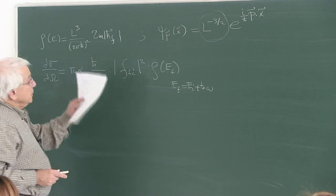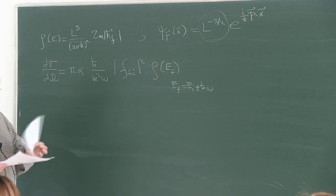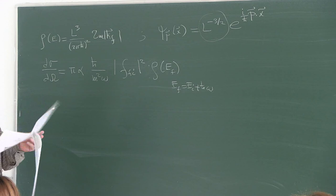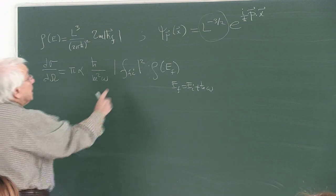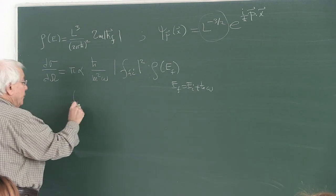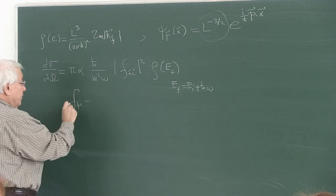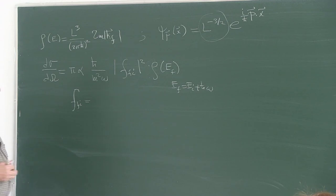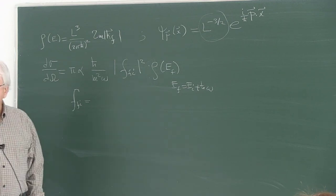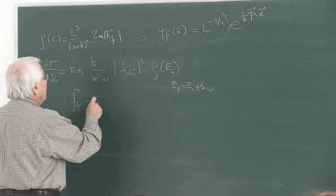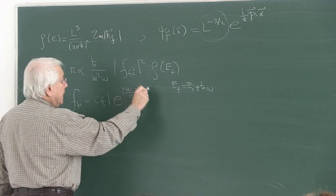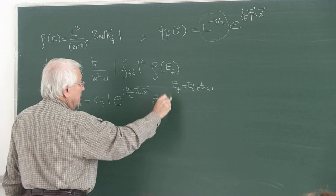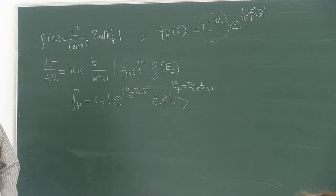The wave function in the position eigenvector basis for a plane wave corresponding to a free particle carrying momentum p is: one over L to the three-halves times e to the i over h-bar times p dot x. This is the renormalization — L is the size of the mathematical box, not a physical box. So this is the density of final states. What we have to do next is put them together and turn our attention to the determination of the matrix element.